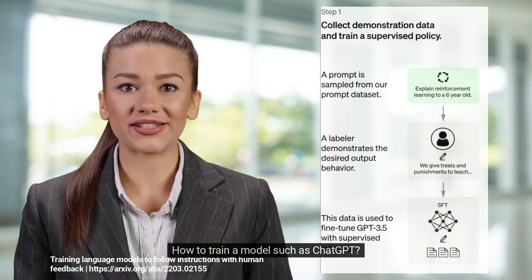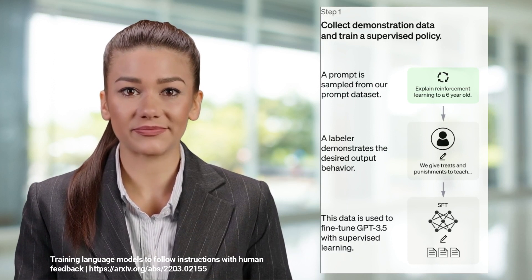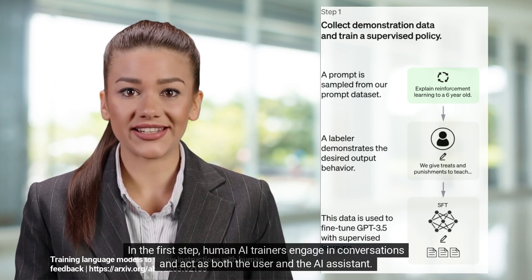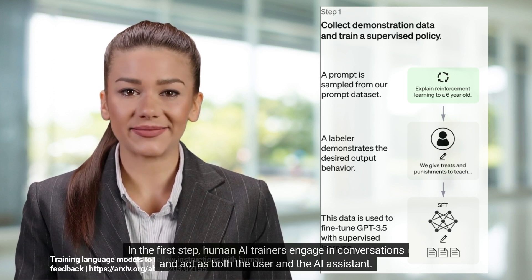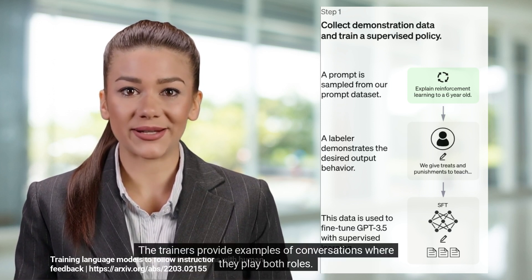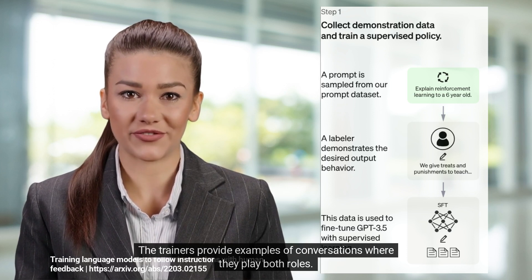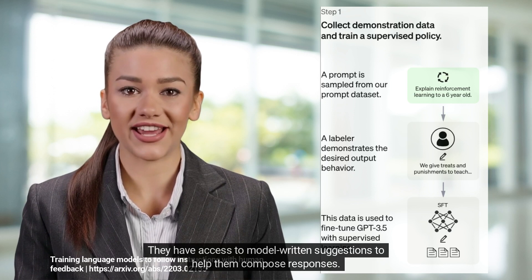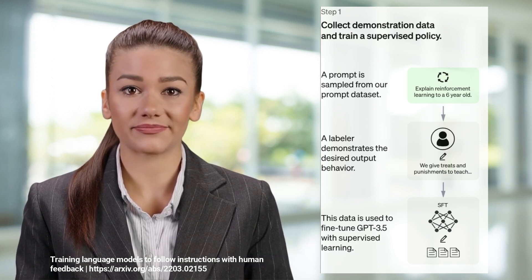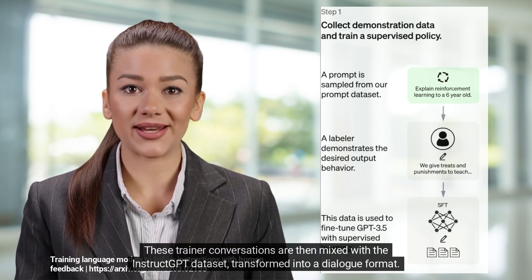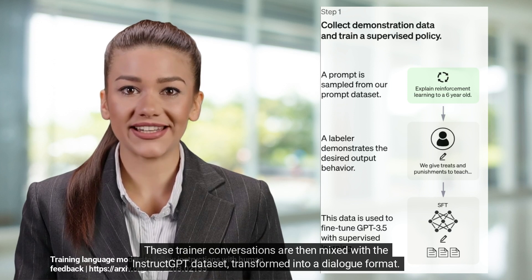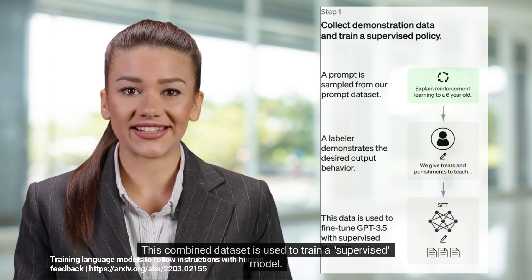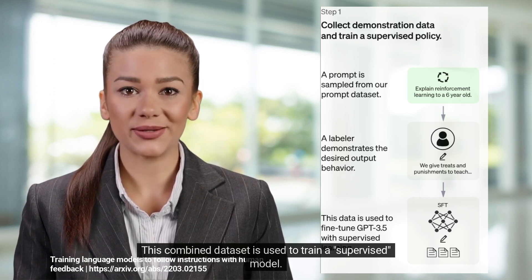How to train a model such as ChatGPT? In the first step, human AI trainers engage in conversations and act as both the user and the AI assistant. The trainers provide examples of conversations where they play both roles. They have access to model-written suggestions to help them compose responses. These trainer conversations are then mixed with the InstructGPT dataset, transformed into a dialogue format. This combined dataset is used to train a supervised model.